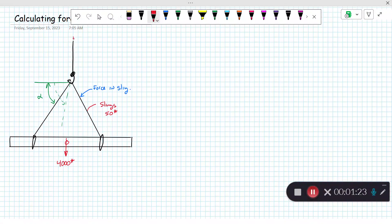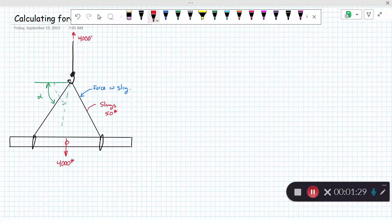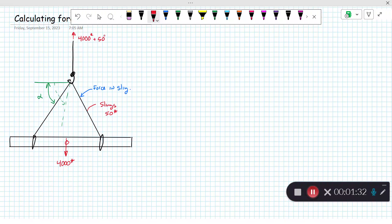If we look at the overall weight, hopefully it's obvious that the force in the cable will be equal to the weight of the beam plus the weight of the slings. That's 4,050 pounds.